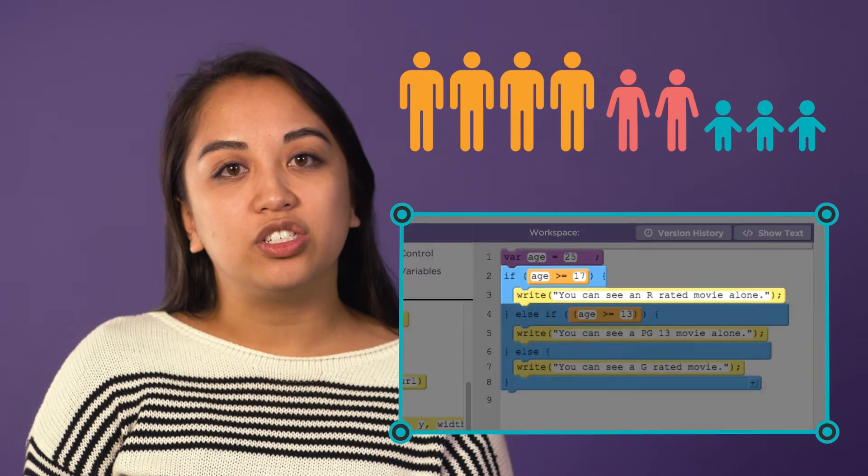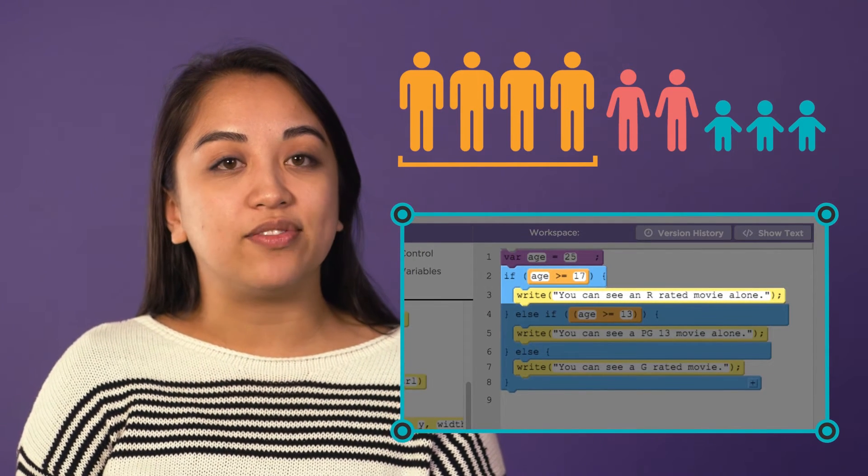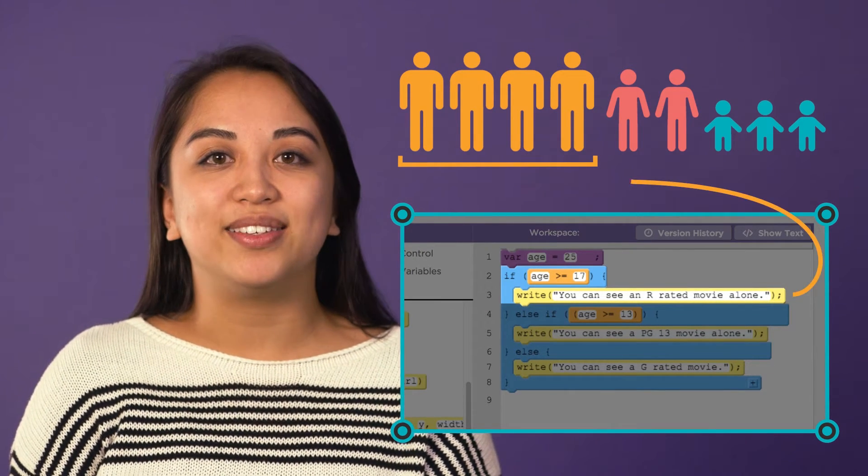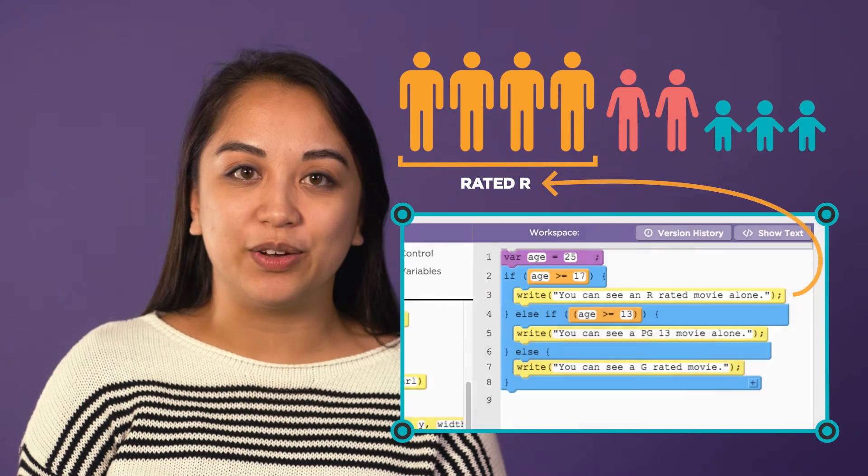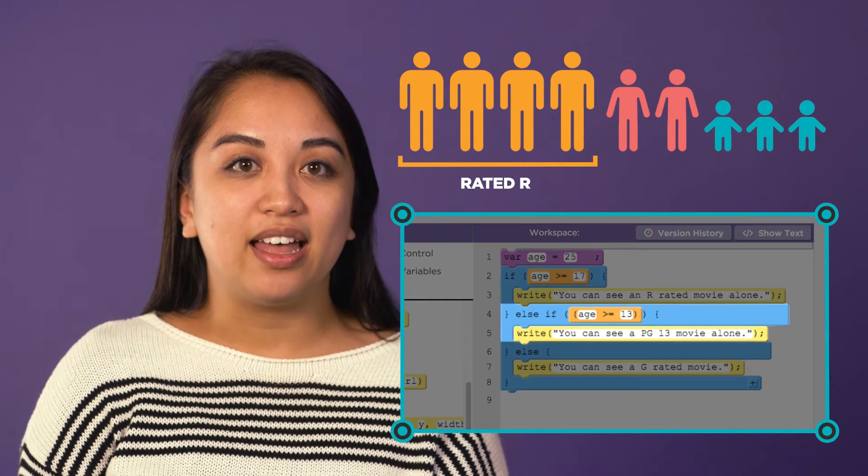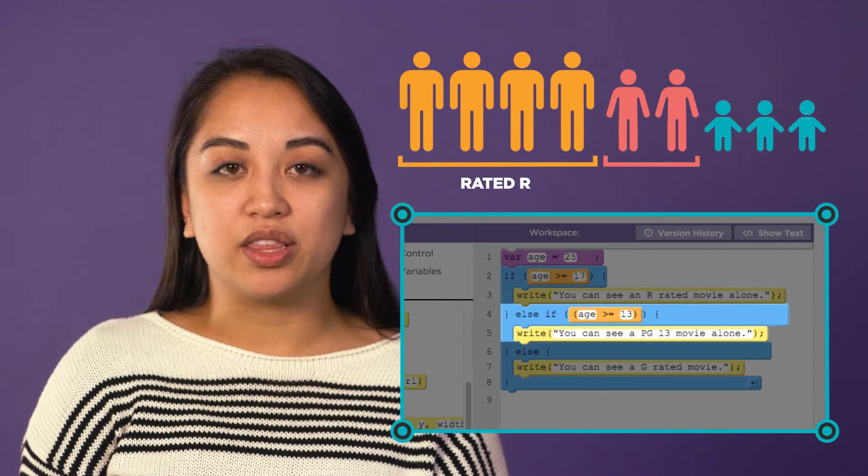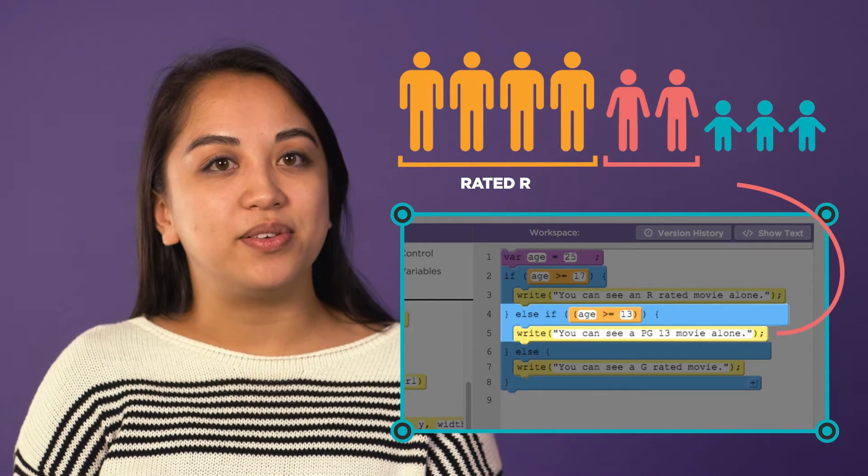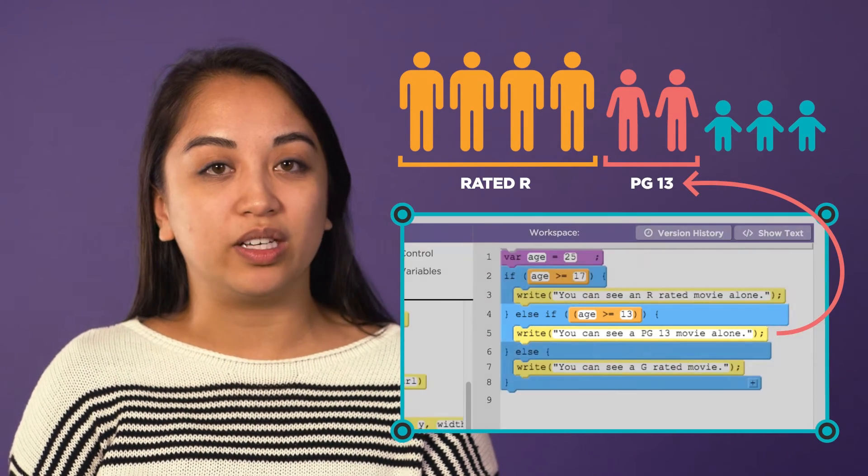So if age is greater than or equal to 17, write that user can see an R-rated movie alone. Else if the age is greater than or equal to 13, write that the user can see a PG-13 movie alone.